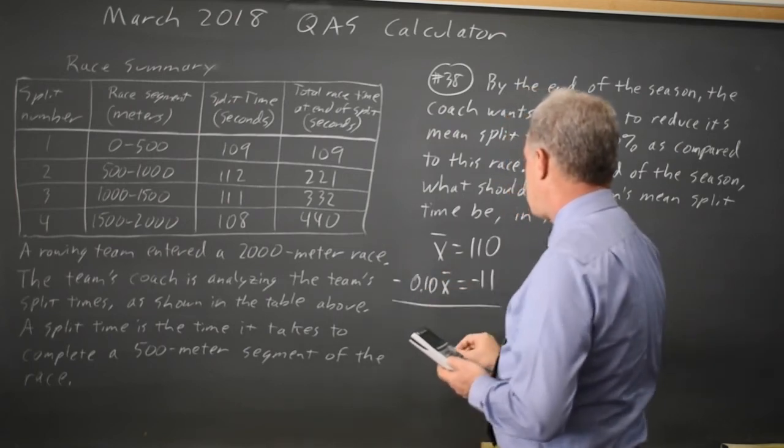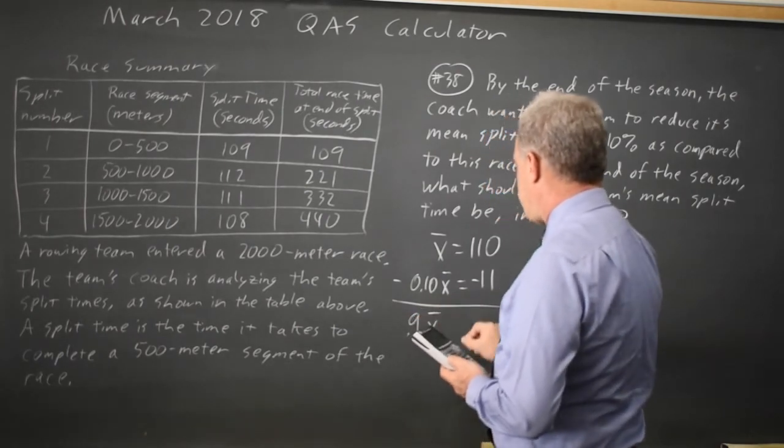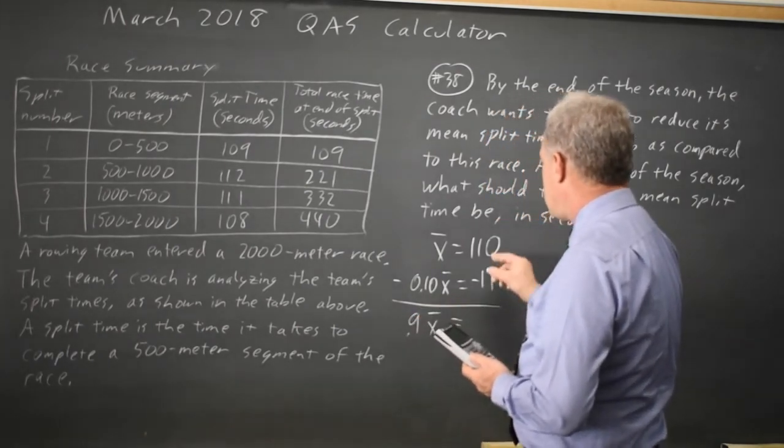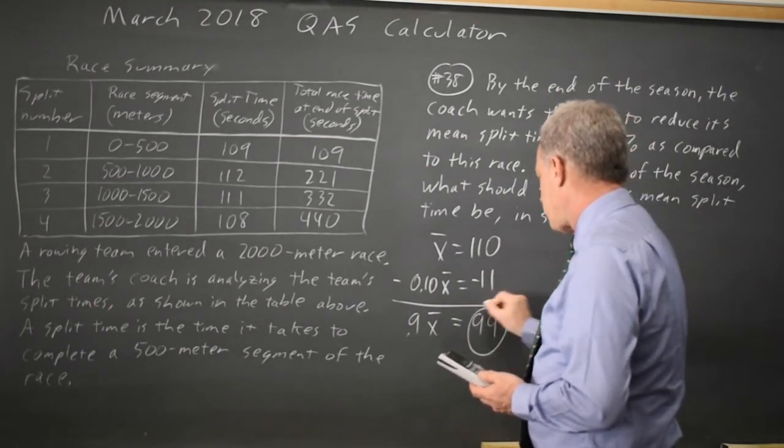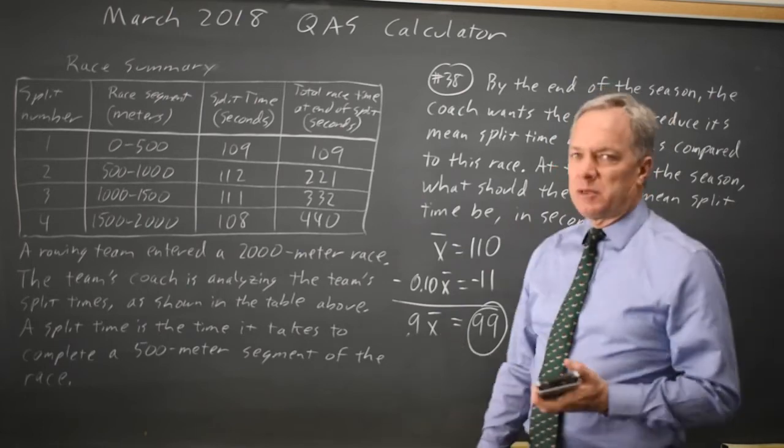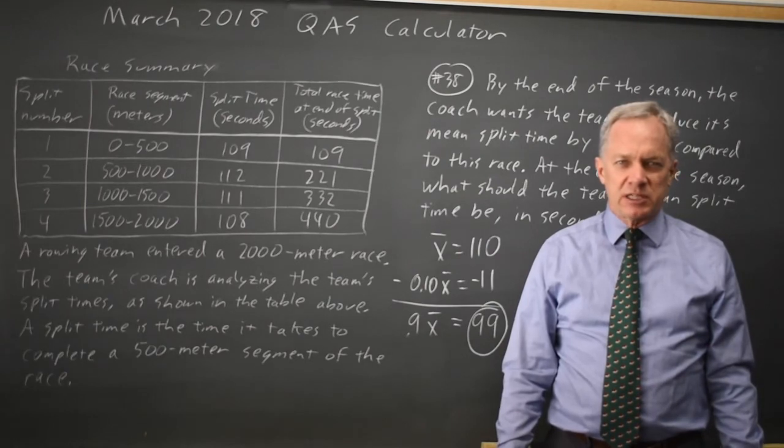So 90% of the previous mean is the goal time. 110 minus 11 is 99. The coach wants the team's mean split time to be 99 seconds for each 500 meter segment of this race.